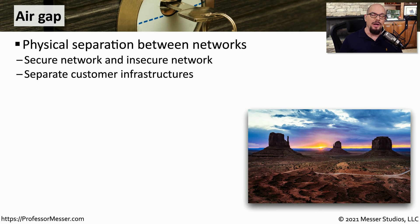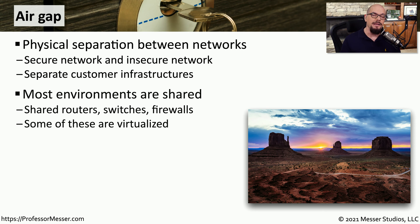An air gap is a way to provide a physical separation between devices or between networks. This might be a common way to prevent access between a secure network and an insecure network, or you may want to have an air gap between different customers' networks. In many environments, the entire infrastructure is on one big shared network, so you're able to move between different systems, different virtualized environments, using the existing switches and routers on that network.